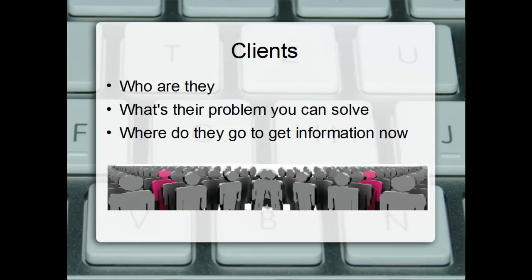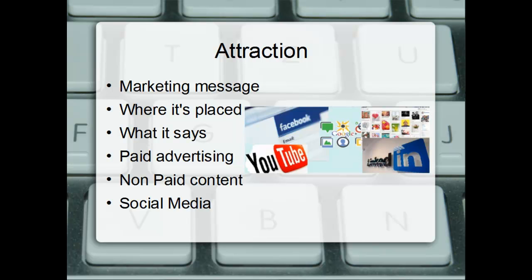Once you understand who your clients are, you need to go out and find where they're hanging out online. Your attraction strategy is made up of your marketing message and where they go. LinkedIn is a great strategy for professionally oriented people. If you're in the food business, pictures of your food do much better on Instagram, Pinterest, Facebook, or Twitter. Look at what the message is, where it's placed, and who it's saying it to.